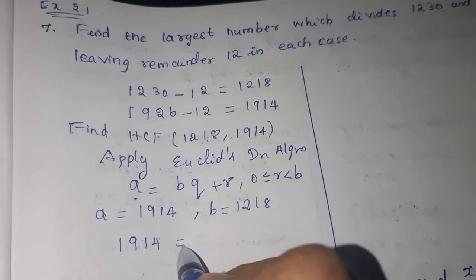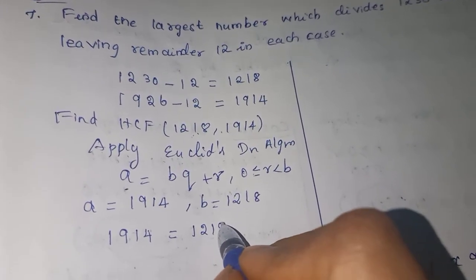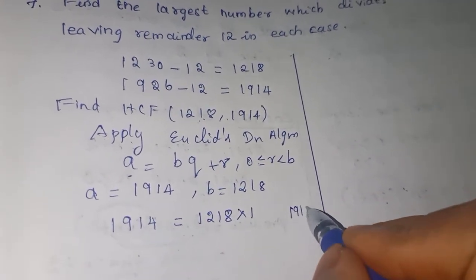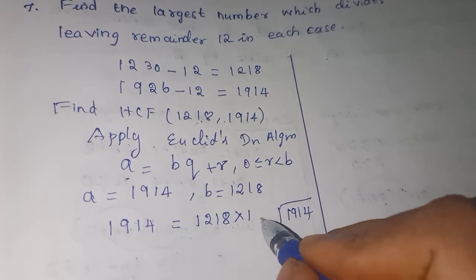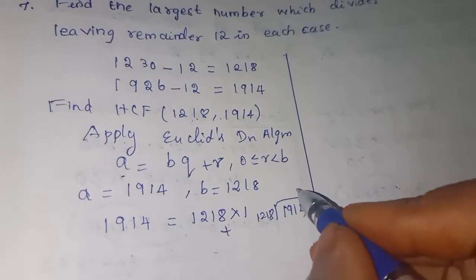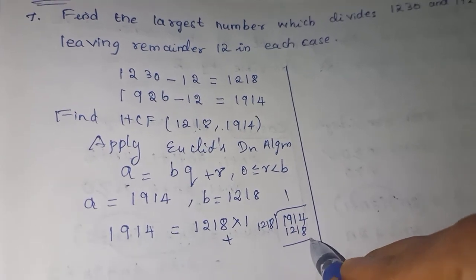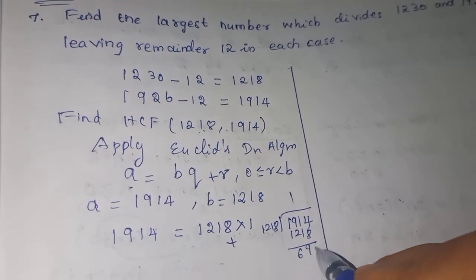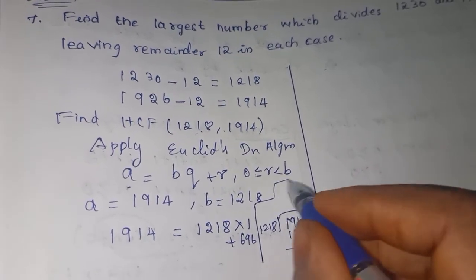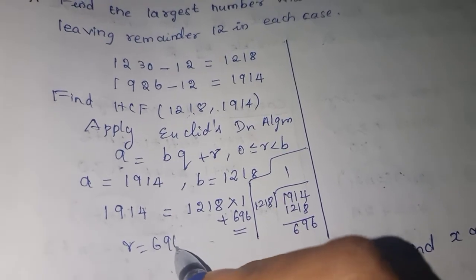Dividing 1914 by 1218: 1914 = 1218 × 1 + 696. So the remainder is 696, which is not equal to 0, so we have to continue.